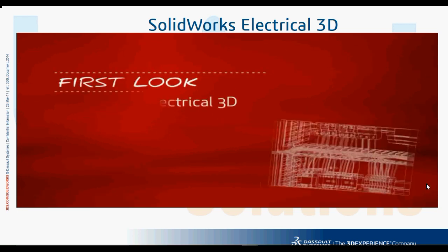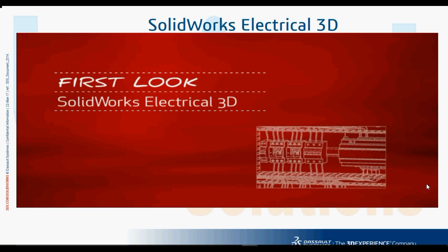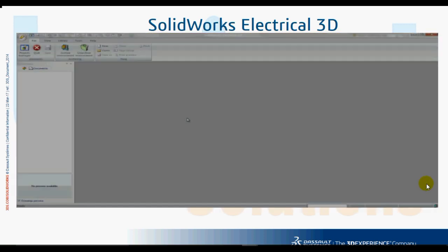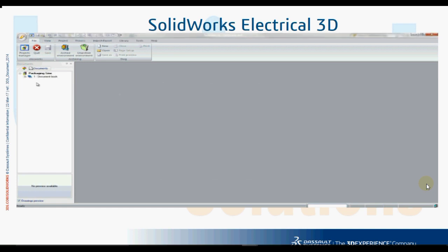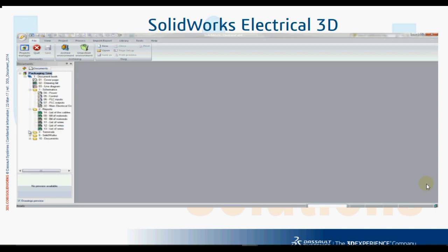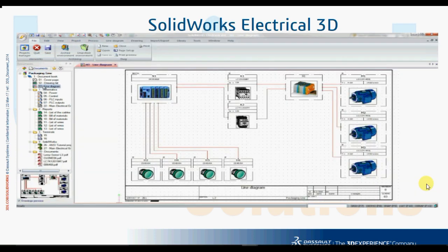This is your first look at SOLIDWORKS ELECTRICAL 3D. For companies that design or manufacture equipment with electrical systems, using the right tools is critical. SOLIDWORKS ELECTRICAL 3D is powerful collaborative software that allows mechanical engineers to quickly and effortlessly integrate complex electrical routed systems designed by electrical engineers, using SOLIDWORKS ELECTRICAL and its extensive database of parts and capabilities.